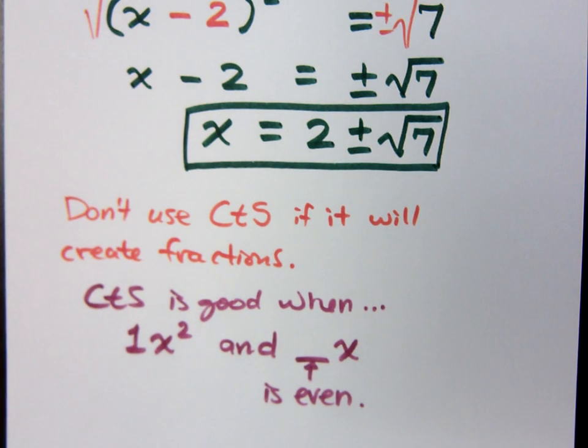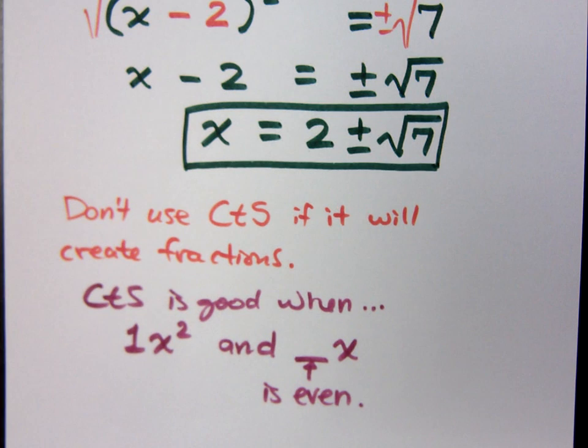If you have a plane 1x squared and you've got an even coefficient of x, this is when you want to complete the square because if it's even, you can easily divide by 2 and square it and it's going to work out very nicely for you. If you don't have that or it's going to create fractions, don't do that.